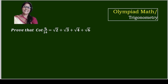Today I have taken a very simple but basic question from trigonometry. Prove that cot(π/24) equals square root 2 plus square root 3 plus square root 4 plus square root 6. Note that square root 4 is simply 2.